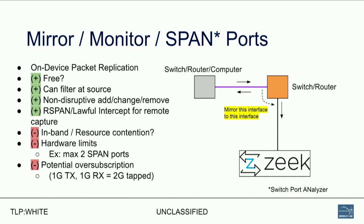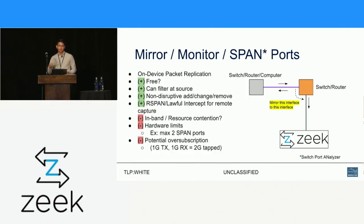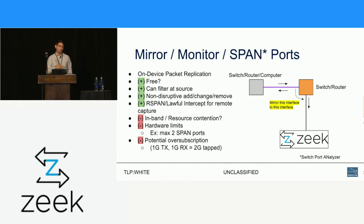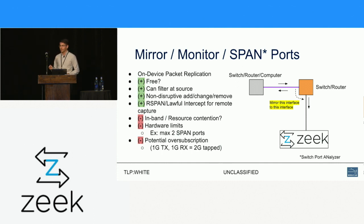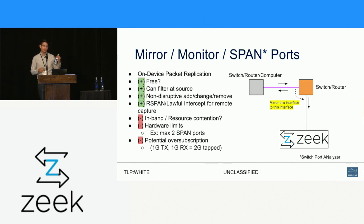If you're using R-SPAN or lawful intercept, you can send it to a remote location over in-band channels. But because it is in-band, you risk resource contention — if your switch or router is heavily loaded or getting DDoSed, it may not be able to service that packet replication, so you may not see what's going on. You also run into hardware limitations; some models only let you do two span ports per device or line card. You also risk over-subscription: if you have a 1 gig port and want to see every packet, that's 1 gig transmit plus 1 gig receive — 2 gigabits per second — and if your switch only has 1 gig ports, what do you do?